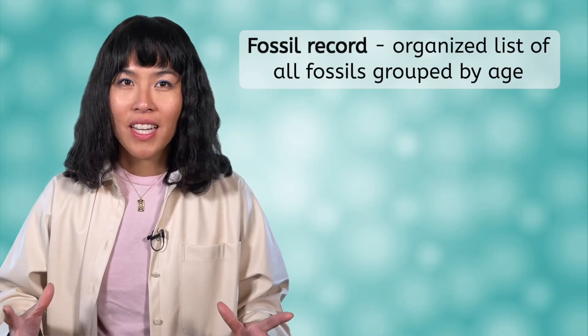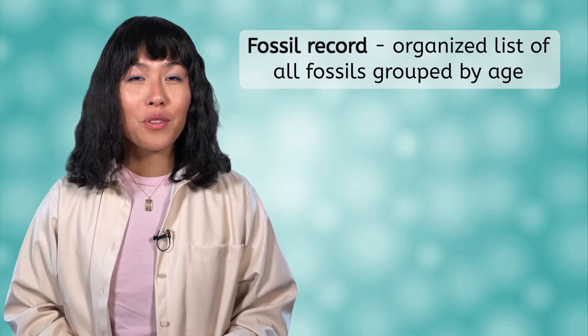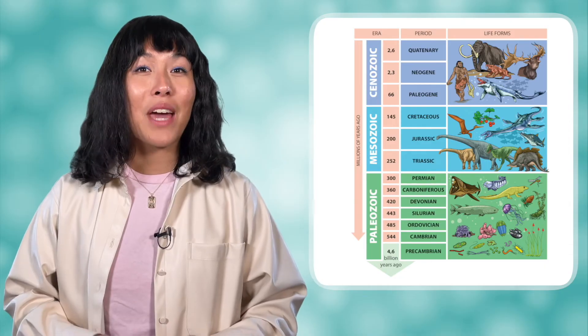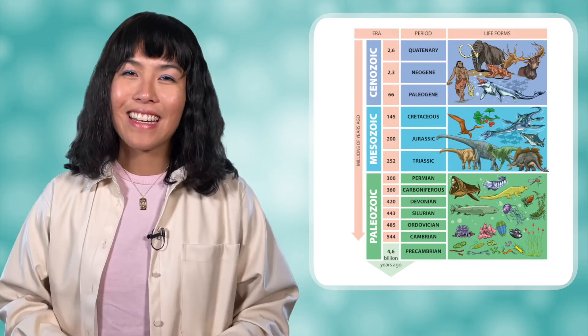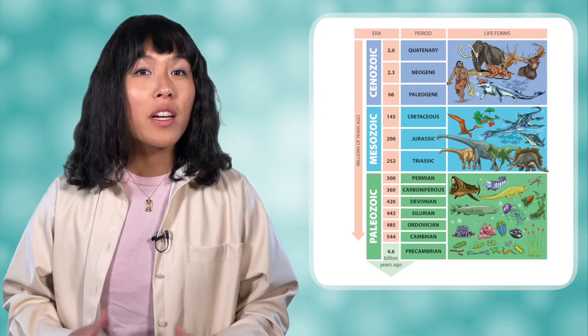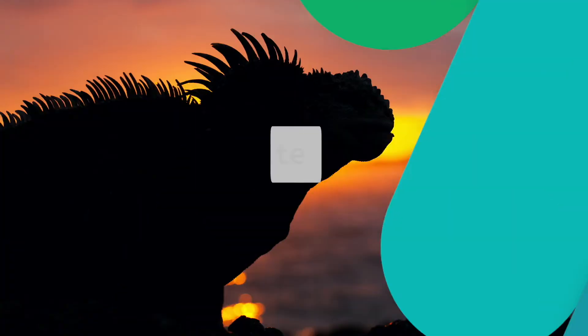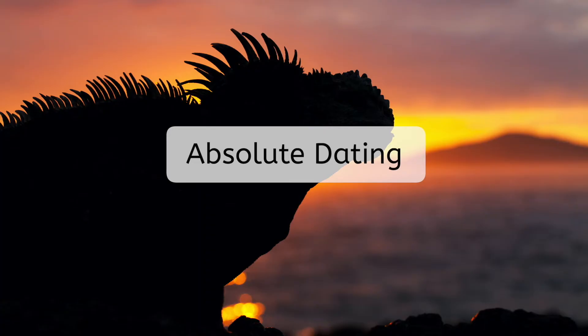When we accumulate all of the fossil information we have, this is known as the fossil record. It is an organized, ordered list that groups fossils by age into specific geologic time periods. You'll learn more about these time periods and which fossils are found in each in the next lesson. Scientists can use the fossil record to draw conclusions about how life has changed and evolved over time. Relative dating can tell us which organisms lived at the same time and put fossils in order from oldest to newest, but what if we want more quantitative data?